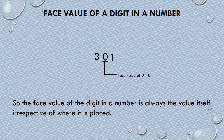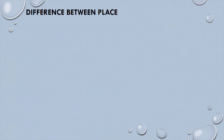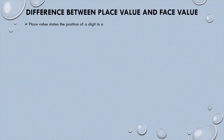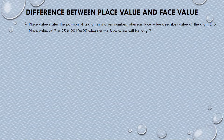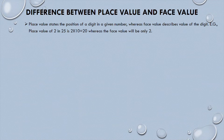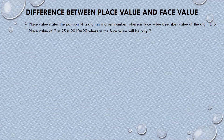Now we know what place value and face value are, but what is the difference between them? Number one: place value states the position of a digit in a given number, whereas face value describes the value of the digit itself. For example, the place value of 2 in 25 is 2 × 10 = 20, whereas the face value of 2 is simply 2.